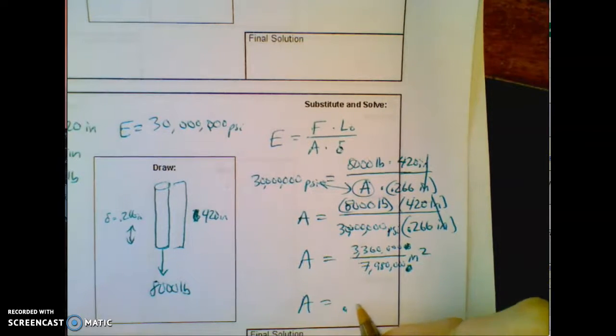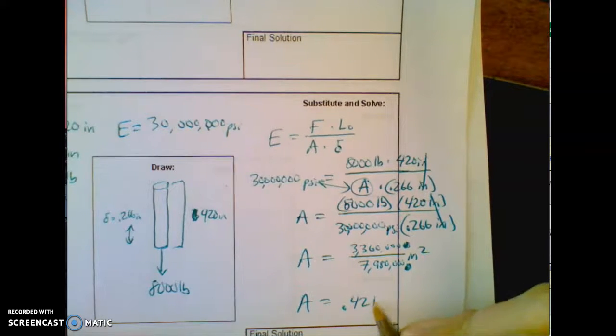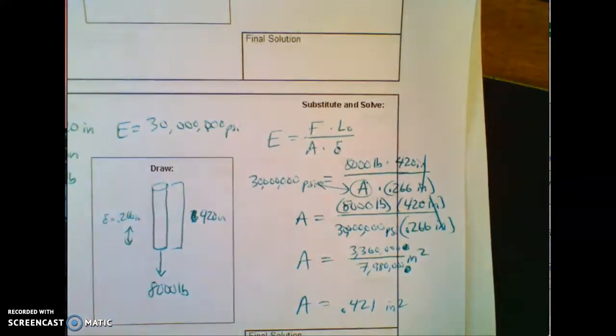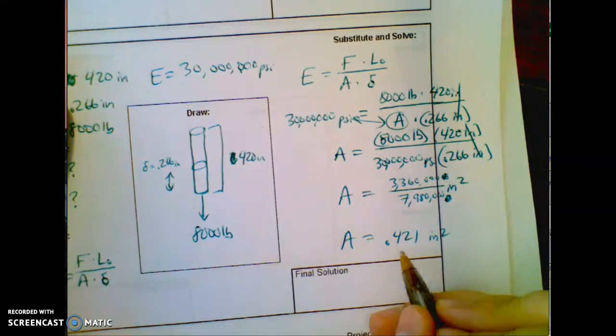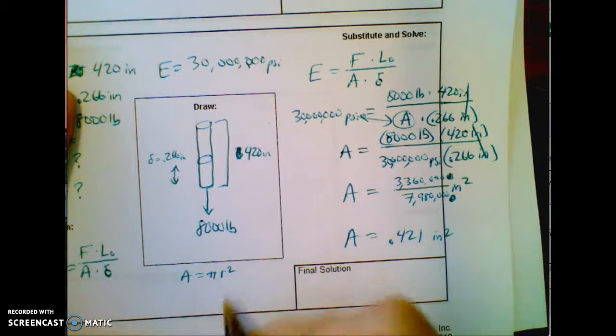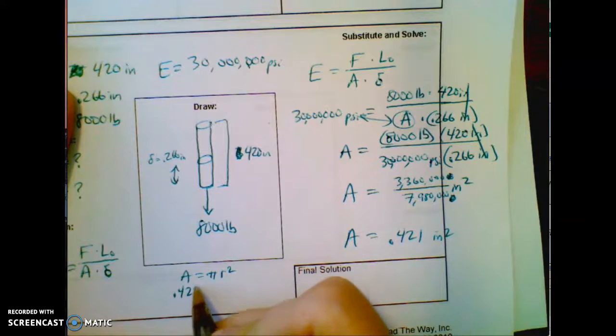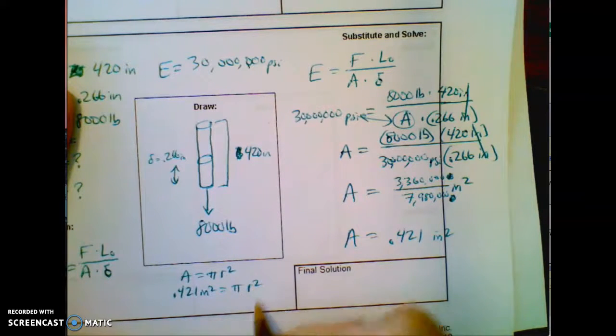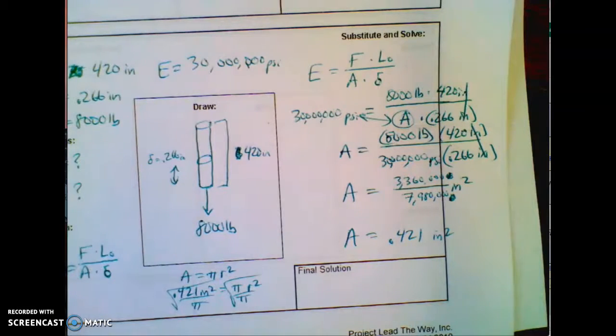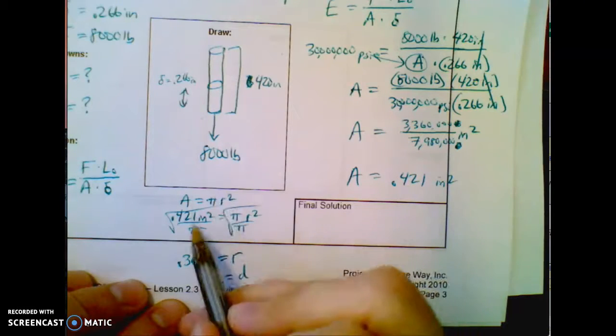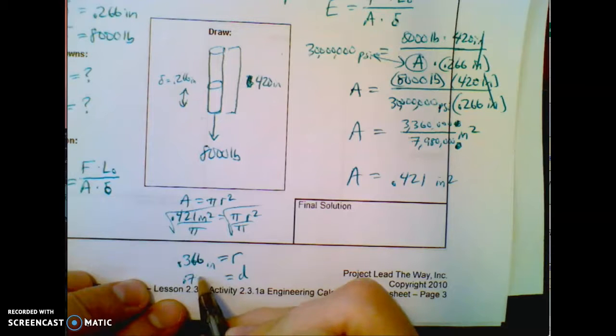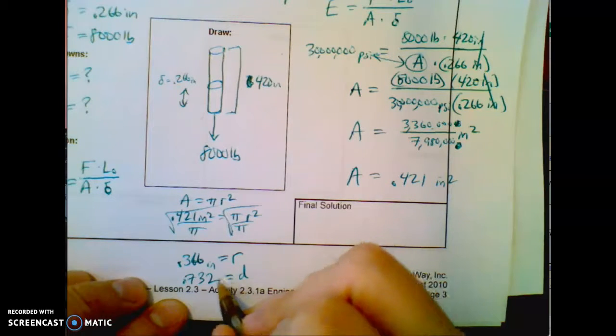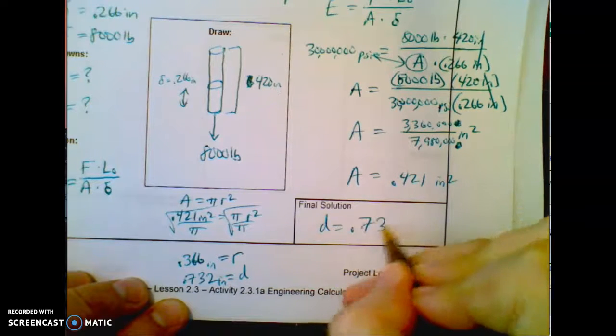All right. So I did 8,000 times 420, and I did 30 million times 0.266. And I got these numbers. Write them down. And then you'll have less likely to make an error. My area came out to be 0.421 inches squared. Now, that's not my diameter. I'm close. I got the area of the cross section, which is a circle. And just remember, area equals pi r squared. So if 0.421 inches squared equals pi times radius squared, I'm going to divide by pi, and then square root both sides. Kind of do that in one step here. Let me pause it. So yeah, I divided by pi, and then I took the square root, and I get 0.366, but that's radius. So you need to double that number for diameter, and you get the diameter is 0.732 inches.